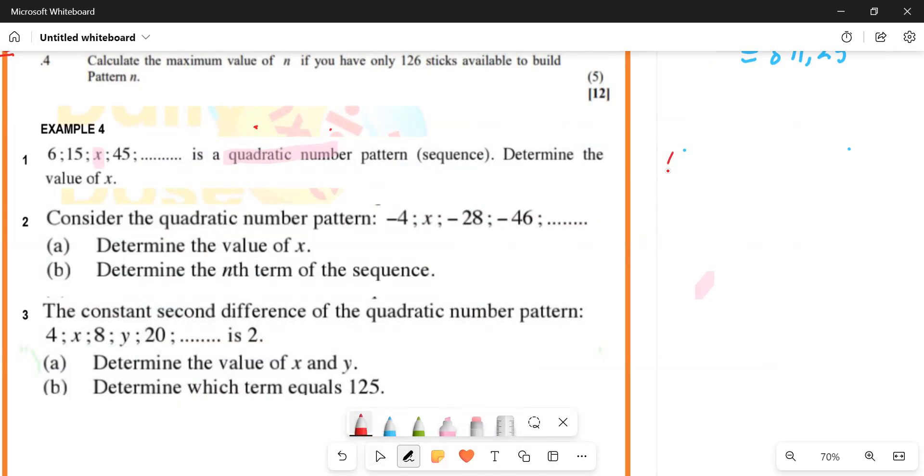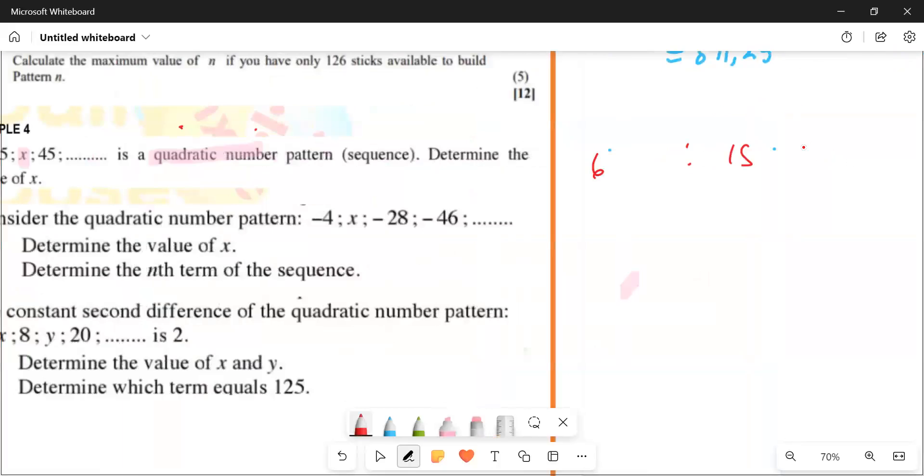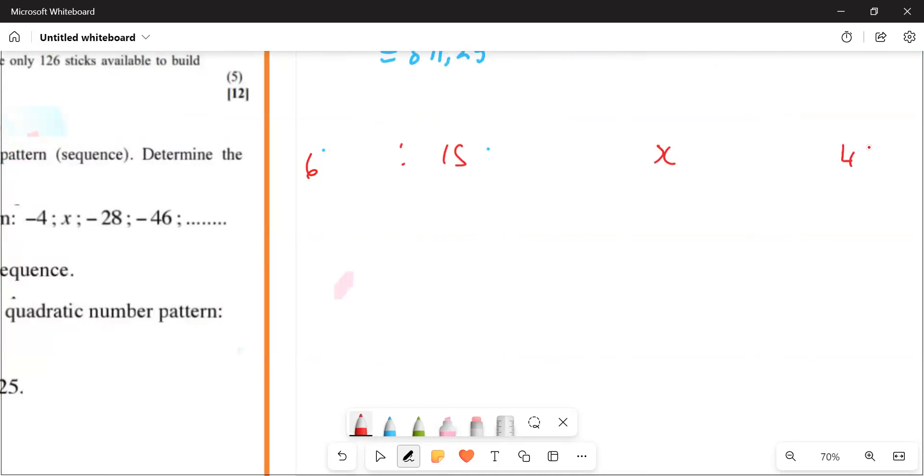What do I mean by that? Let's look at the following. We have 6, and then you have 15, and then after that you have x, and then after that you have 45. We're not proving what it's a quadratic, it's a quadratic. So I can then say to them 15 minus 6, what is 15 minus 6? It's 9. And then I can say x minus 15, what is going to be x minus 15? x minus 15. And then 45 minus x, what is going to be 45 minus x? It's 45 minus x.